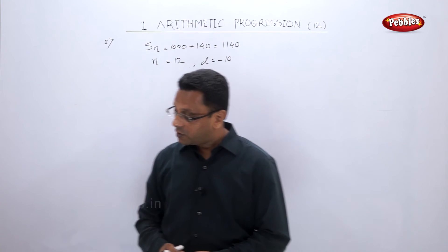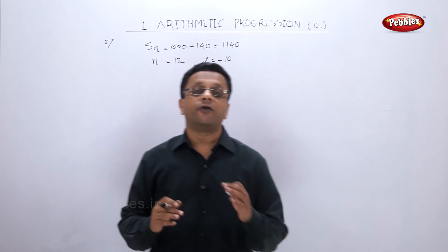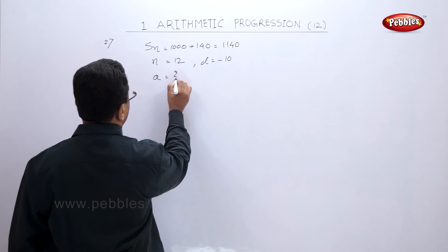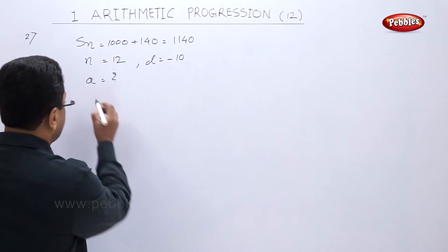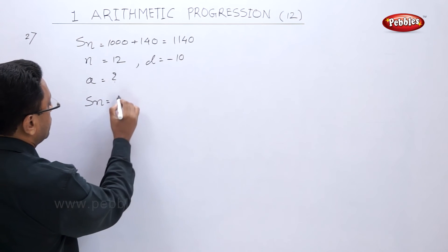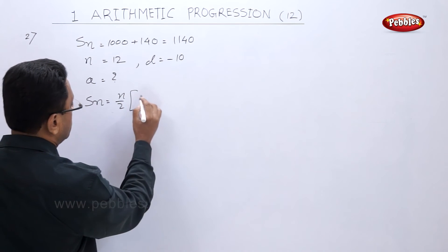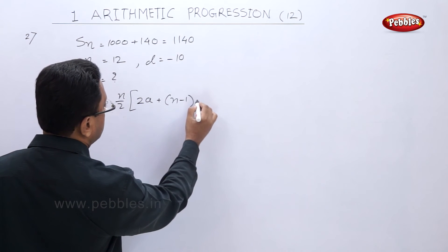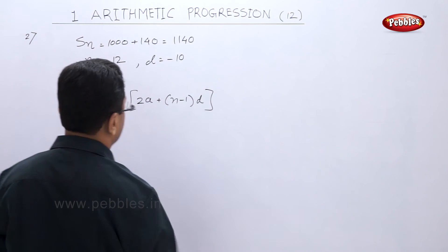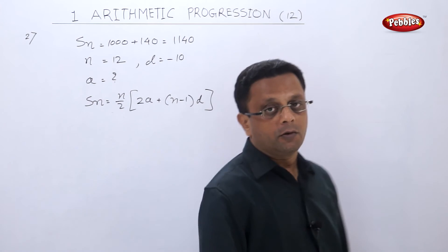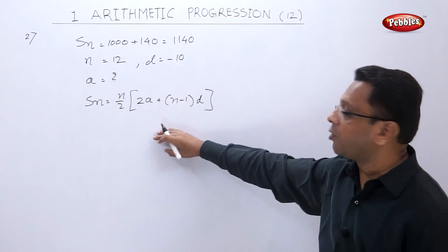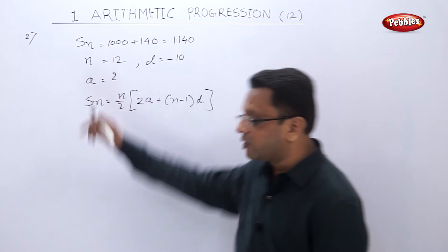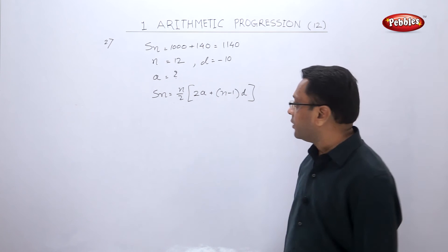The question asks: what should be his first installment? That means we have to find the value of a. Using the formula SN = n/2 × (2a + (n−1)×d), and substituting the known values, only a is unknown, so we can solve for it.